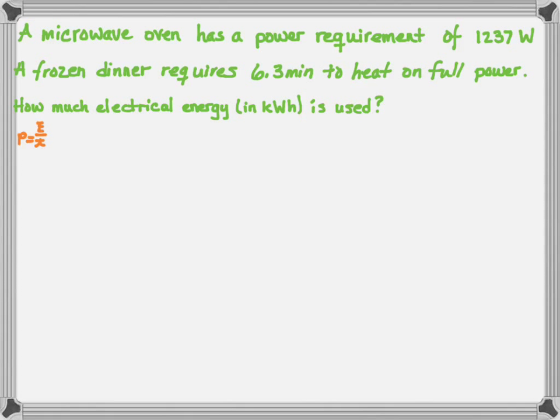The relationship I'm going to use is power equals energy over time. They give me the time needed to cook the frozen dinner. They tell me the power which is 1237 watts, and the question is how much energy is used.